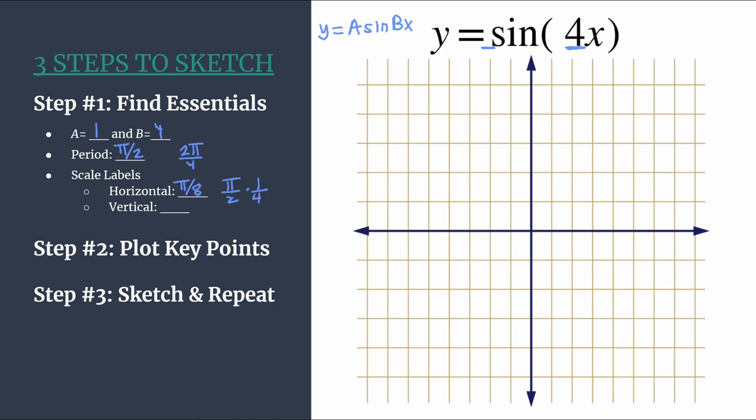For our vertical scale, this one's usually a little bit more straightforward. One typically works here, or you could look at your value for A. Let's go ahead and label our axes. We have pi over eight as our horizontal scale label, so we'll count by pi over eight. So one pi over eight, two pi over eight which reduces to pi over four, three pi over eight, four pi over eight which reduces to pi over two.